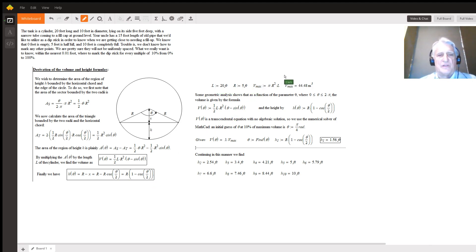So here's the calculation in MathCAD. We have L = 20, r = 5, Vmax = πr²L, and therefore 1,570.8 cubic feet. We have our two results here from the previous derivation.